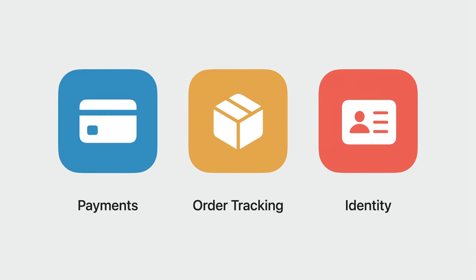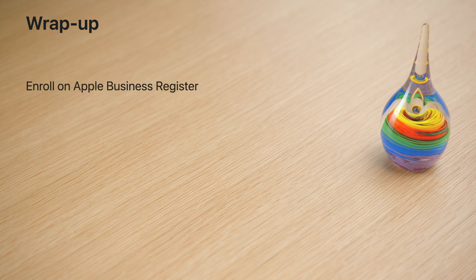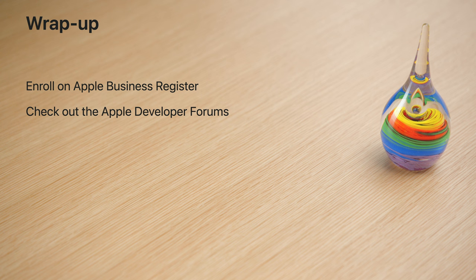And now, back over to David. Thanks, John. So, what have we learned today? We've taken a look at enhancements to payments with support for Apple Pay Later and new use cases. Order tracking's new APIs allow you to add orders to Wallet from within your apps and services. And there's a new way to verify mobile driver's licenses with Tap to Present ID on iPhone. To wrap up, if you're a business, consider enrolling on Apple Business Register — this will help enrich the Wallet and Apple Pay experience for your customers. You can visit the Apple Developer Forums where you can ask questions and get help all year round. And lastly, if you have any feedback, we'd love to hear from you — you can do this by using Feedback Assistant.